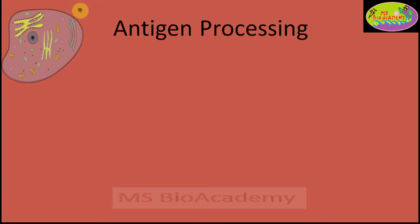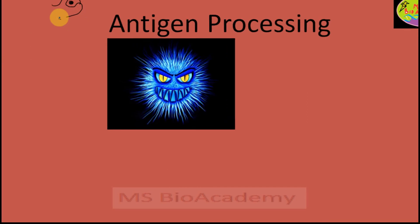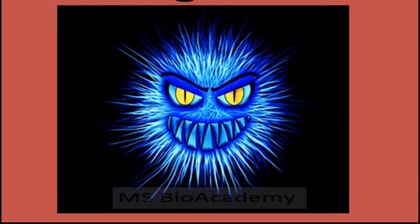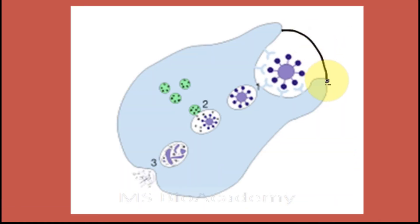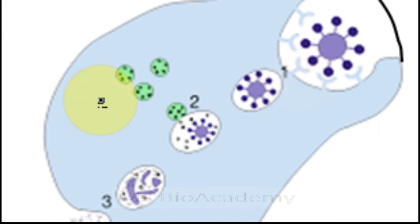Let's suppose this is a typical antigen presenting cell — an APC — and there is an exogenous antigen, a pathogen, outside. Since APCs like macrophages and dendritic cells are phagocytic cells, they are going to eat up this pathogen and engulf it inside. They will phagocytose this pathogen, and then form an endosome.